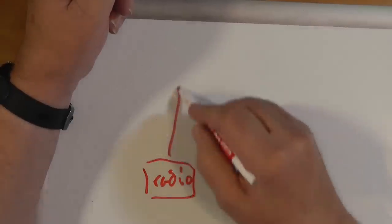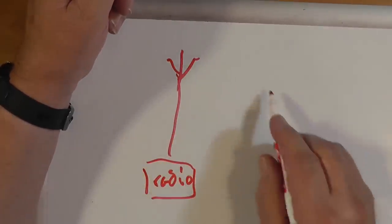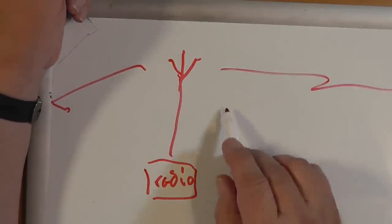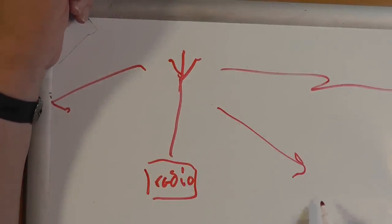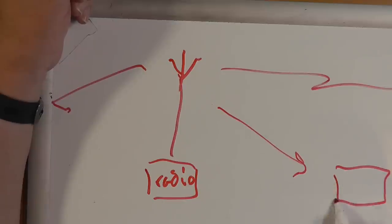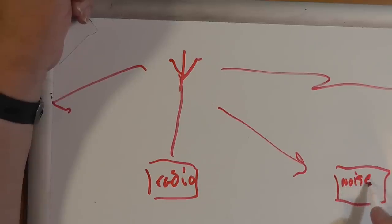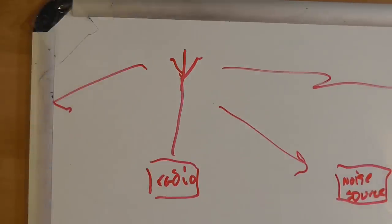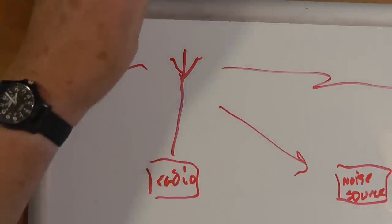Let's look at what he's talking about, a noise canceler. The idea is you've got your radio here, and it's got an antenna, and it picks up from everything around, including a noise source.